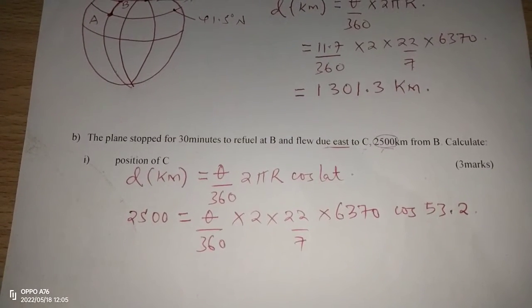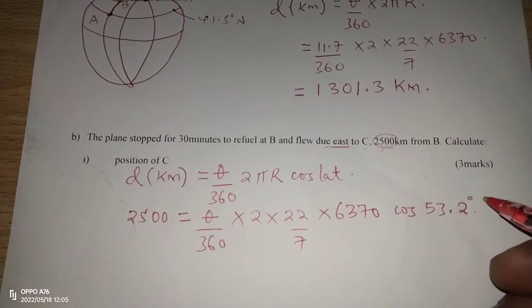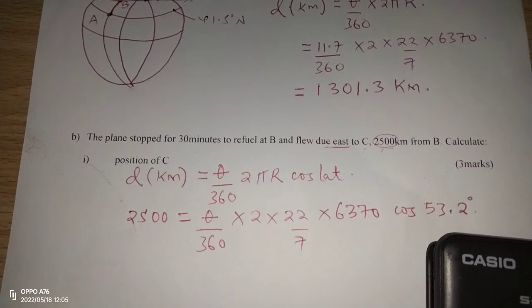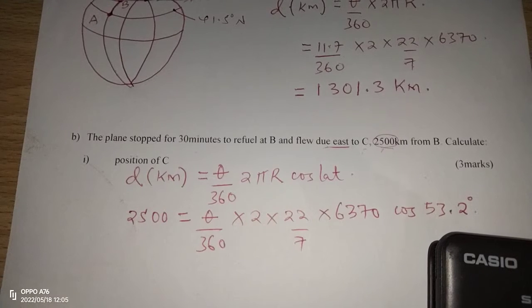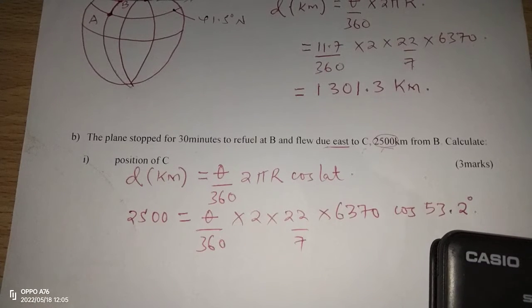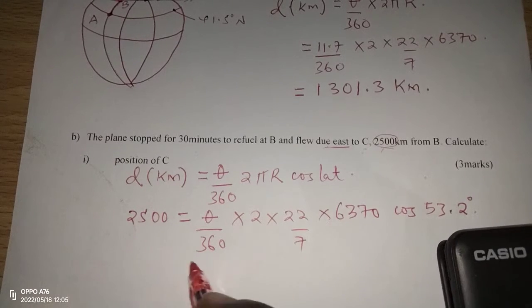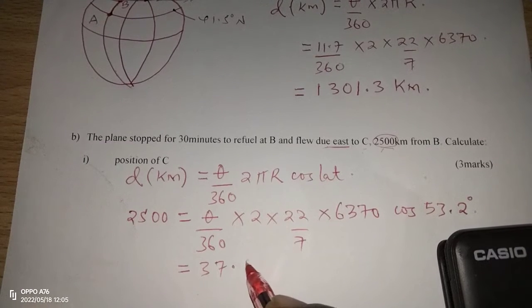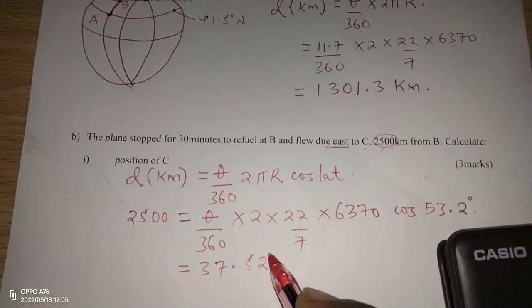Therefore, now with this, we can now get the angle theta here by multiplying 2500 with 360 and 7, then we divide by 2 times 22 times 6370 cosine of 53.2. This gives us 37.2 degrees.